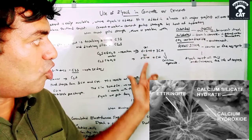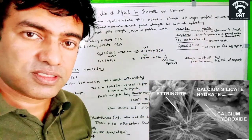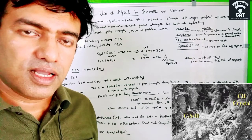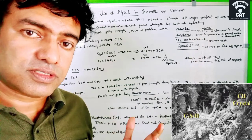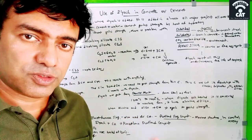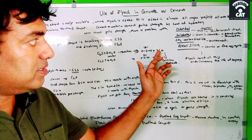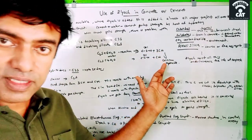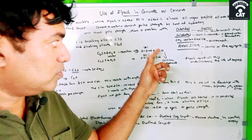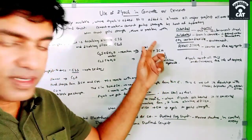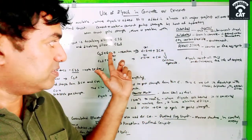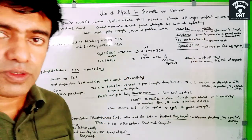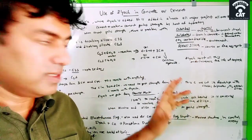The byproducts of these two reactions are CSH and CH (calcium hydroxide). CSH is actually a gel, and it gives 80% of the strength to the concrete. The other byproduct, 3CH and CH — that is, calcium hydroxide — is also present in these reactions.